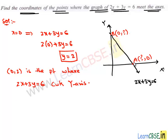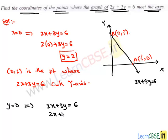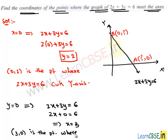Similarly, to find point A, that is the point on the x-axis, we take y coordinate equal to 0. We have the equation 2x plus 3y is equal to 6. Substituting y equal to 0, we get 2x plus 3 times 0 is equal to 6. That means the value of x is 3. Therefore, (3, 0) is the point where the graph of the equation 2x plus 3y is equal to 6 cuts the x-axis.